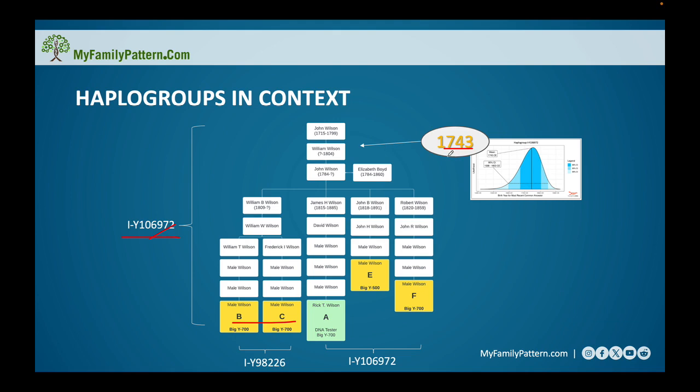But let's also look at this other haplogroup, the 98226, which is a child. If we look at the scientific details, it actually shows that the common ancestor was born around 1809.